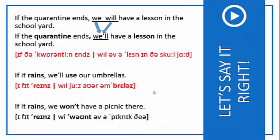Now let's try to say first conditionals correctly. Very often in everyday English, you will hear the short form 'will' instead of 'we will'. Now listen to the following sentences carefully and try to repeat them after me. If the quarantine ends, we'll have a lesson in the schoolyard. If it rains, we'll use our umbrellas. As you've paid attention, 'will' is weak here. Unlike in the sentence: if it rains, we won't have a picnic there. The negative form of 'will' is stressed and is strong in the sentence.